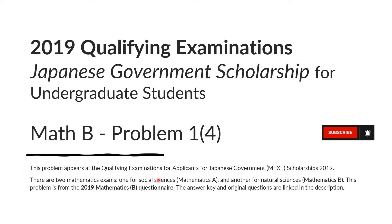This problem appears at the Qualifying Examinations for Applicants for Japanese Government MEXT Scholarships 2019. There are two mathematics exams: one for Social Sciences Mathematics A and another for Natural Sciences Mathematics B. This problem is from the 2019 Mathematics B Questionnaire. The answer key and the original questions are linked in the description.